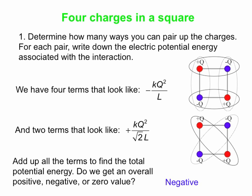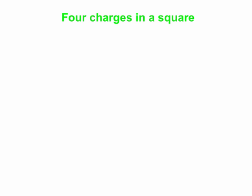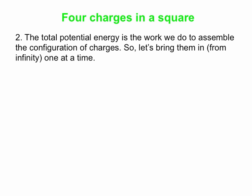The second way to work this out involves calculating the work done to assemble the configuration. We figure out how much work we do to bring all four charges, one at a time from infinity, and place one at each corner of the square.